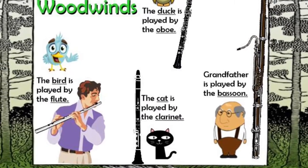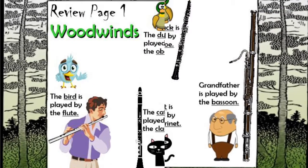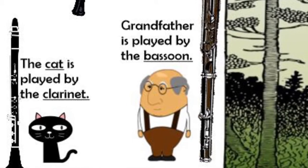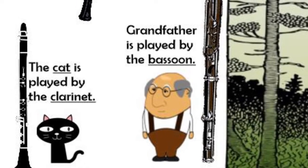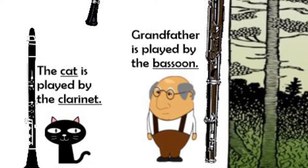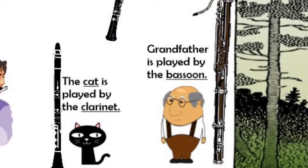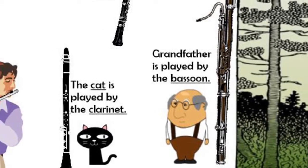Notice how the clarinet looks similar to the oboe, but the clarinet has a wider mouthpiece and the oboe has a really narrow mouthpiece. The last instrument in the woodwind family is the bassoon — grandfather was played by the bassoon. It's the biggest instrument in the woodwind family.